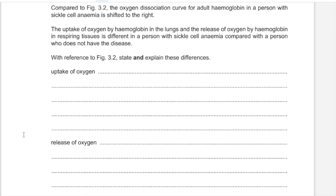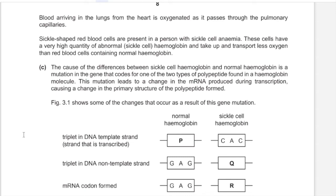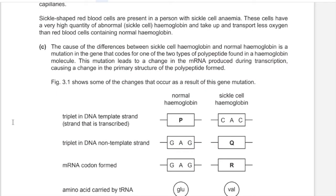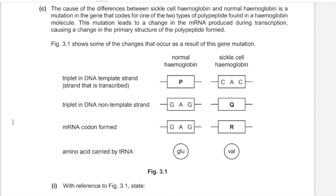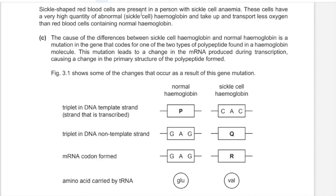Sickle-shaped red blood cells are present in a person with sickle cell anaemia. These cells contain a high quantity of abnormal sickle cell haemoglobin and transport less oxygen than normal red blood cells. The cause of the difference between sickle cell haemoglobin and normal haemoglobin is a mutation in the gene coding for one of the two polypeptides in haemoglobin. One polypeptide is altered, leading to sickle cell haemoglobin formation.